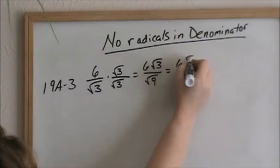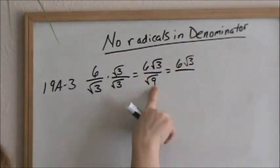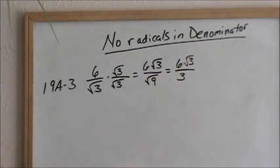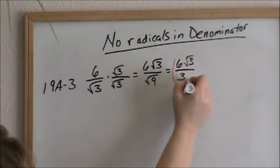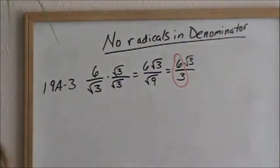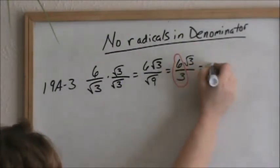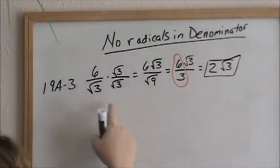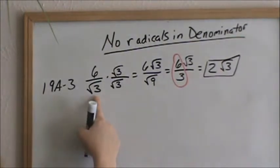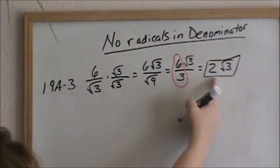Our numerator does not change. Square root of 9 is 3. Always reduce fractions. Remember, you are doing whole numbers to whole numbers, radicals to radicals. You can see that you can reduce 6 over 3. 6 divided by 3 is 2, and your radical stays there. So when we get rid of the radical in the denominator, 6 over square root of 3 is the same thing as 2 times square root of 3.